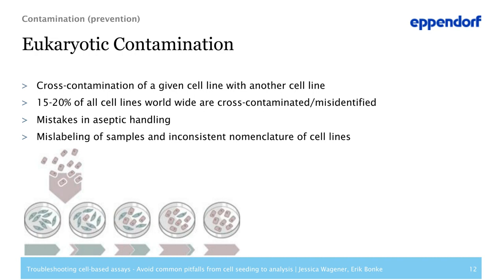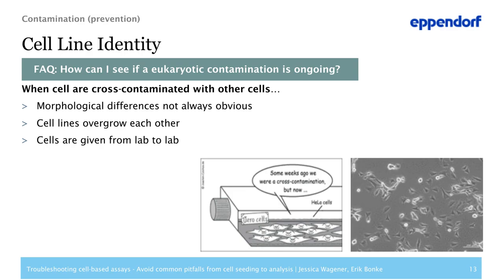A misidentified cell line develops from a cross-contamination of two different cell lines. It is estimated that 15–20% of all cell lines used are either cross-contaminated or misidentified. Cross-contamination usually happens by accident during handling of cells, and mislabeling of samples or inconsistent nomenclature also contribute. As soon as two cell types are mixed up, it is very hard to distinguish them, especially if the morphology is not drastically different. Faster-growing cell lines overgrow and replace slower-growing cells, especially when cell stocks are passed from lab to lab without any quality control.